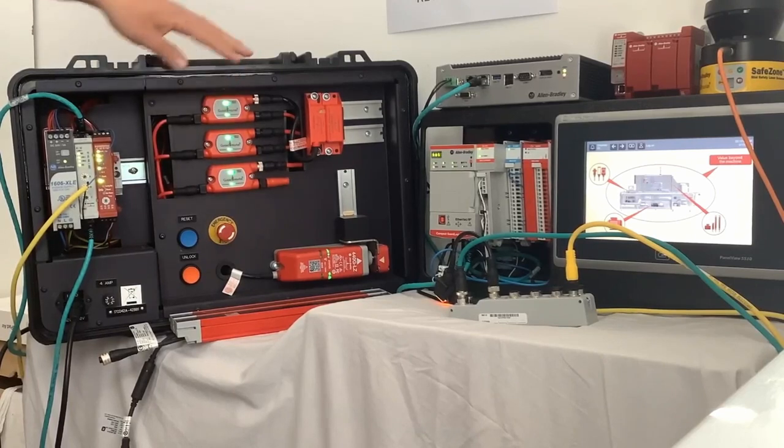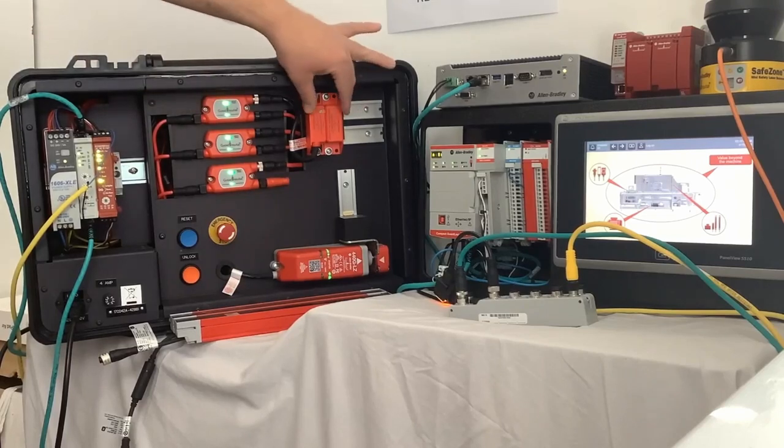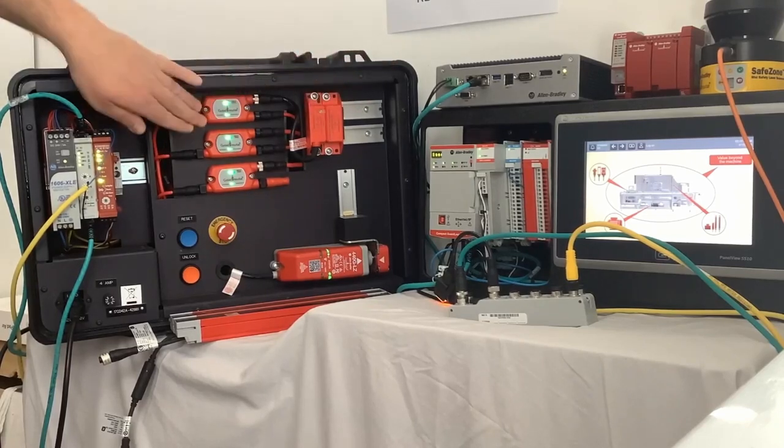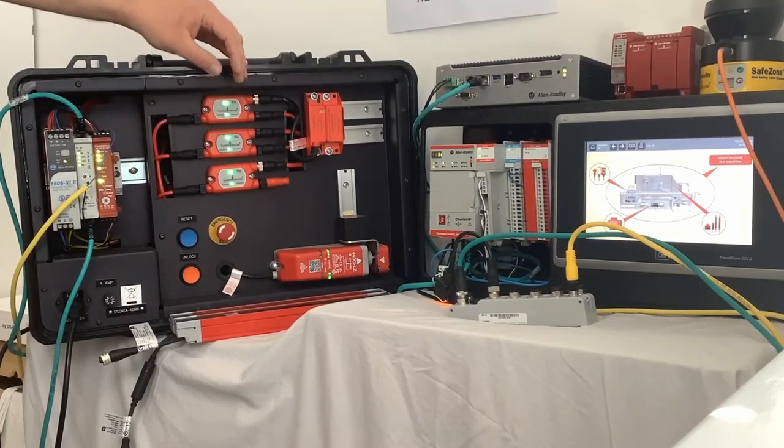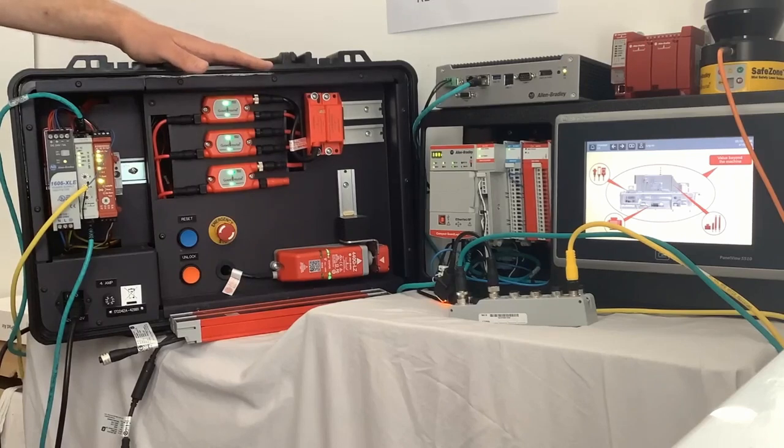So with this technology, you have no risk of fault masking. The way it works is the output from the safety device here, we've got a sensor guard, wires into the smart tap, and the smart tap is doing the diagnostic coverage at that point. So you cannot fault mask. This is really good for retrofitting to existing machines that have dry contacts that we're bringing up to the latest standard.